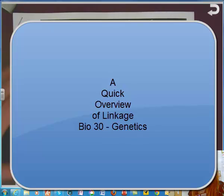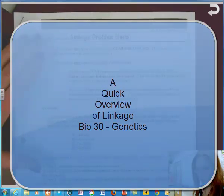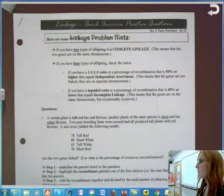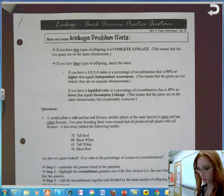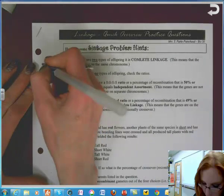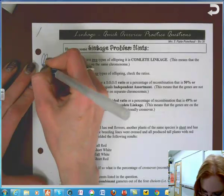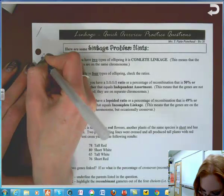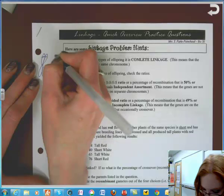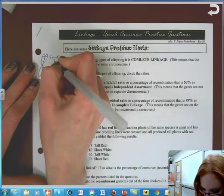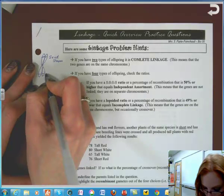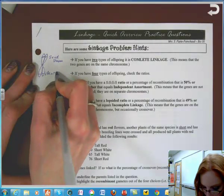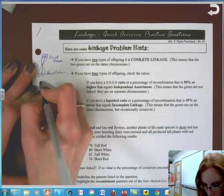Okay, so today's topic is linkage. A couple things that you need to know. We said linked traits occur or linked genes occur on the same chromosome. So if we were to talk about a chromosome, the traits that we were dealing with would be maybe this is seed shape and this is maybe plant color. They are on the same chromosome.